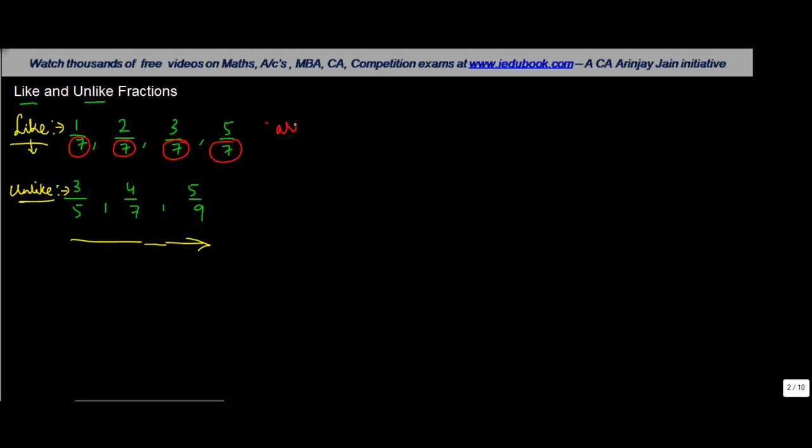So in all these fractions the denominator is same. Can you find out one factor which is like for the first set of fractions in the unlike one? Yes, it is 4 by 7, why? Because the denominator here also is 7.